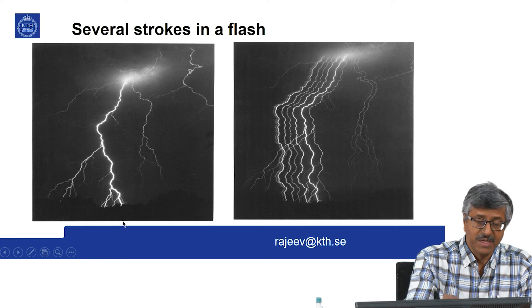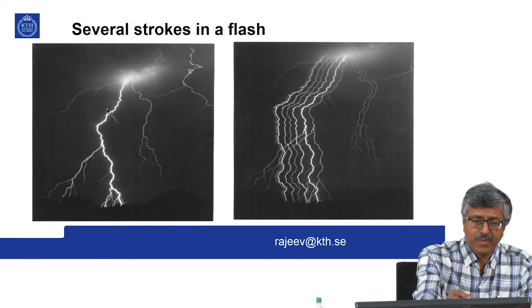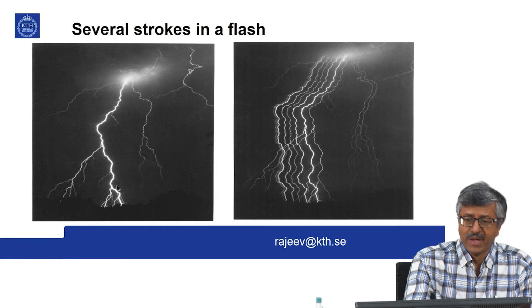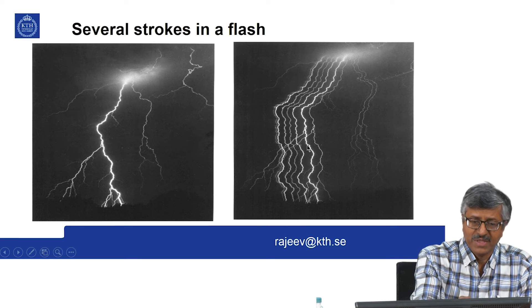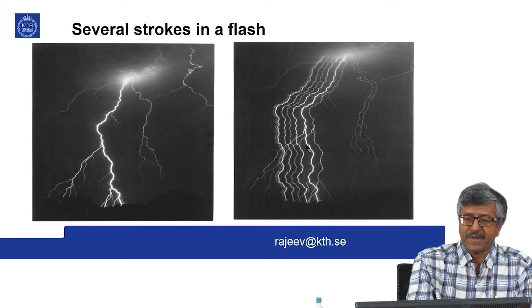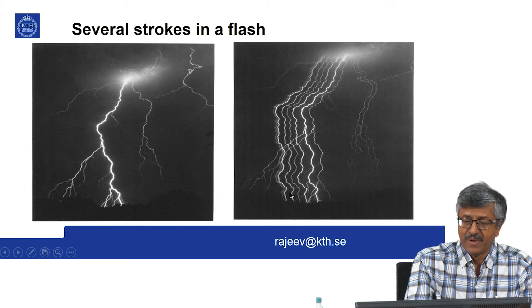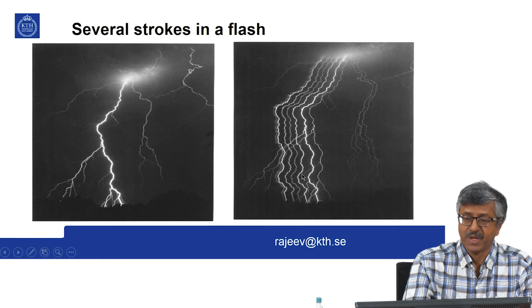Within a single lightning event, which lasts close to a second, you can see several strokes. A photo taken of the same event with a camera moved sideways uses the movement as a time axis, and you can see individual strokes interspersed with time intervals between them. So each lightning event will contain several strokes.